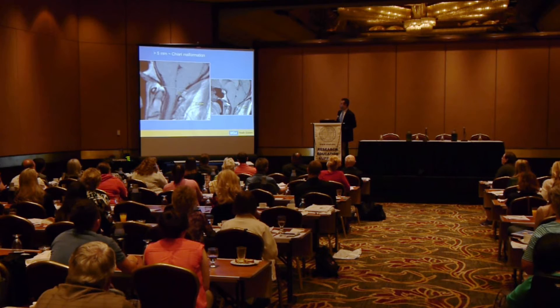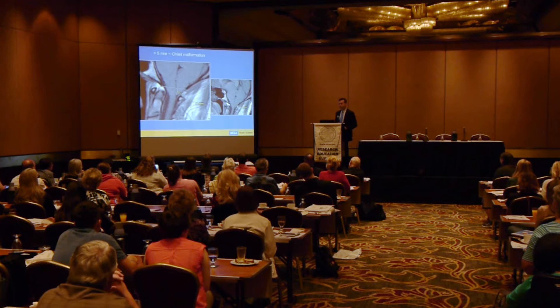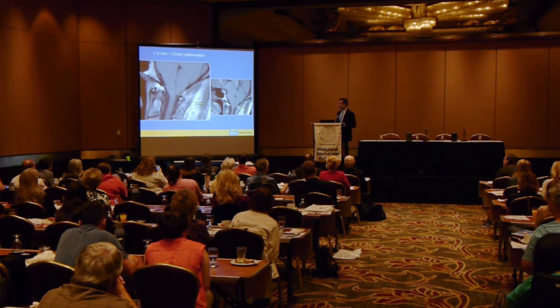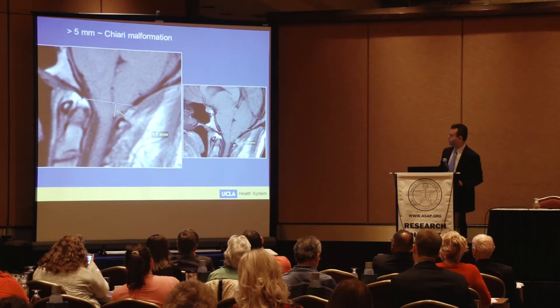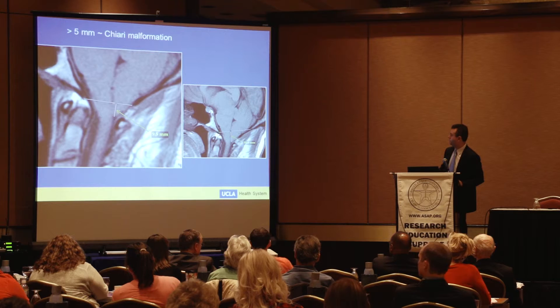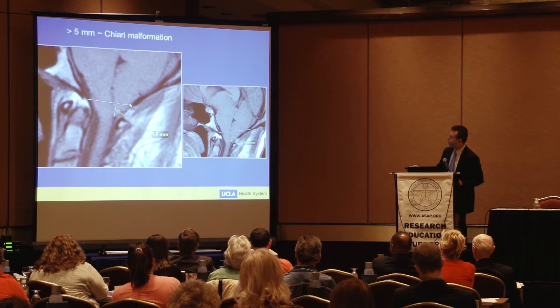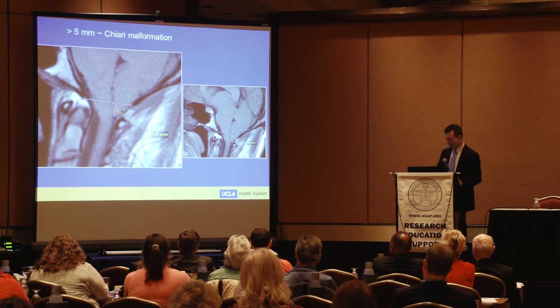For a typical Chiari malformation, we measure from the clivus to the occiput, draw a perpendicular line, and greater than five millimeters of tonsillar descent defines a Chiari malformation. That works well in adults but not as well in children — in children we may allow up to a centimeter. It's important to measure from the actual edge of the bones, not from where the marrow signal ends. The bone actually extends further down to where the black cortical line ends, and that's the correct measurement landmark.